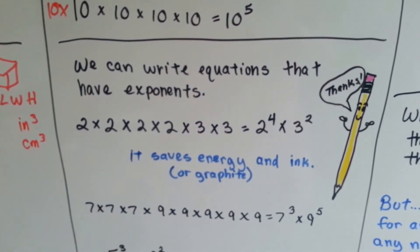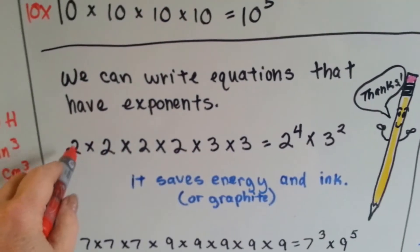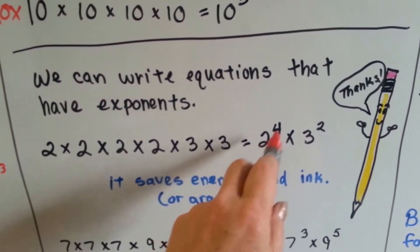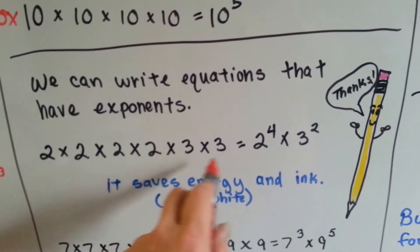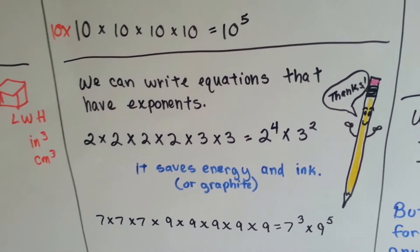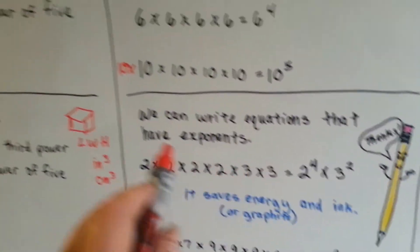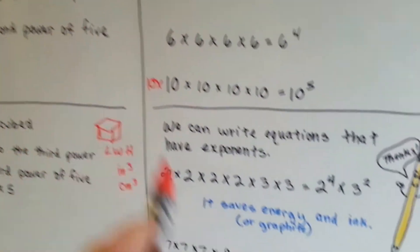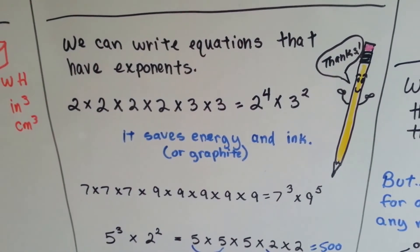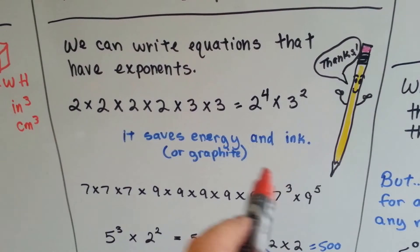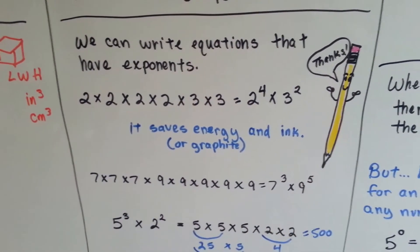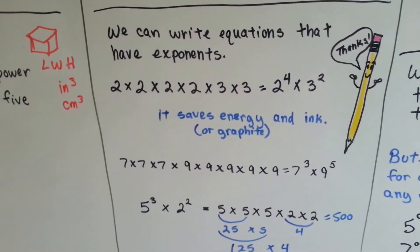We can write equations that have exponents. If you've got four 2's, you have 2 to the fourth power. And if you've got two 3's, you've got 3 to the second power. Remember, it's to the second power or squared — we could say '3 squared.' But it saves energy and graphite. Pencils are made out of graphite, so your pencil appreciates you saving it.